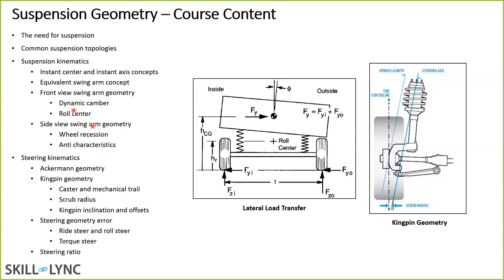In steering, we'll look at Ackerman geometry, the properties the kingpin defines, and steering geometry error. The suspension always traces different arcs in compression and rebound; different components might trace different arcs, and the difference between those arcs is known as steering error — which causes effects during handling. We'll also study the steering ratio.